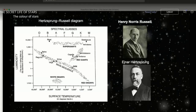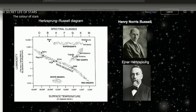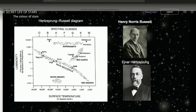Two famous astronomers — Henry Russell, an American, and E.J. Hertzsprung, a Dutch astronomer — independently came up with the idea of plotting luminosity against surface temperature. This is called the Hertzsprung-Russell diagram. If you're doing astrophysics at any level, this is the one thing you've got to know — it basically tells you everything going on with stars. When they plotted it, nearly all the stars fell on a single line, called the main sequence, though nobody was sure initially why. The Sun, Sirius, and Vega are all on this line.